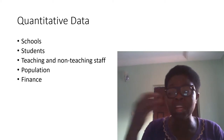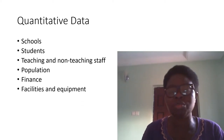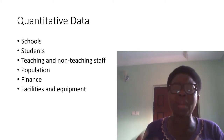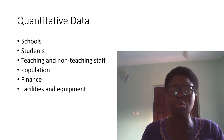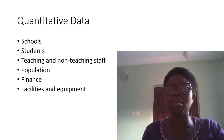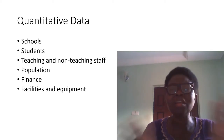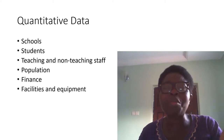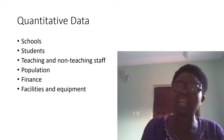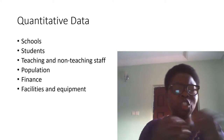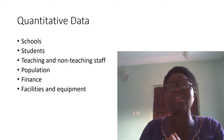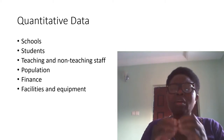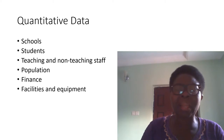Then the next thing is finance — nothing can work if the finance is not there. You need money to drive what you need to do. There are also facilities and equipment. The number of students you enroll in a school will determine the total number of benches, desks, and chairs required, as well as the equipment that will facilitate teaching and learning.